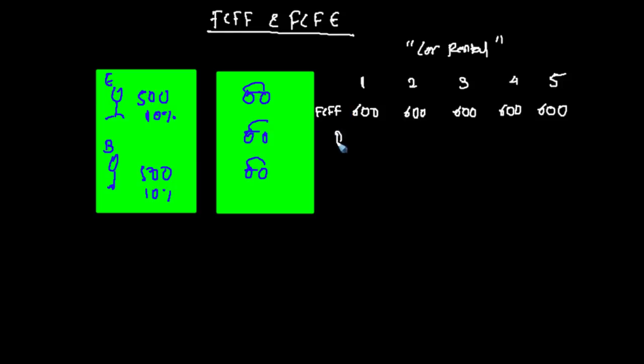And this FCFF we have to discount by WACC. And what do you get then? You get value of the entire firm. And once you have the valuation of firm, you can always figure out what should be the valuation of equity. Now in this case, what do you think would be your WACC? It would be 10 percent because the cost of equity and cost of debt is same, so weights don't matter. So that's 10 percent.